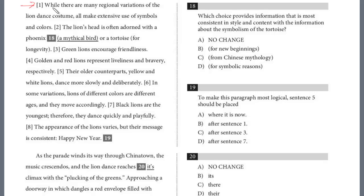We have a new paragraph. We see these brackets. There will be a question about sentence order at some point. While there are many regional variations of the lion dance costume, they all make extensive use of symbols and colors. The lion's head is often adorned with a phoenix, a mythical bird, or a tortoise for longevity.